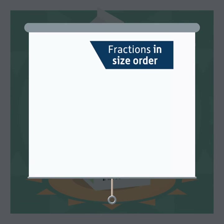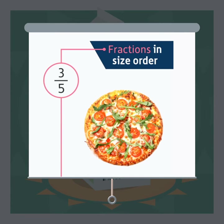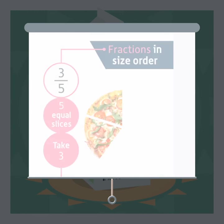This chapter is about putting fractions in size order. Let's start with a quick reminder of what a fraction is. 3 fifths, for instance, is written as a 3 with a line underneath it and a 5 under the line. If you imagine a pizza, you could get 3 fifths of the pizza by cutting the pizza into 5 equal slices and taking 3 of the slices.